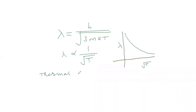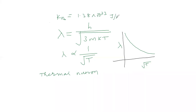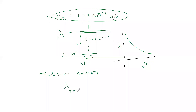For thermal neutrons used in nuclear physics, the mass of a neutron is 1.67 × 10⁻²⁷ kg and the Boltzmann constant k_B is 1.38 × 10⁻²³ joule per kelvin. Substituting these values, the de Broglie wavelength of a thermal neutron equals 25.17 divided by the square root of absolute temperature, in angstroms.